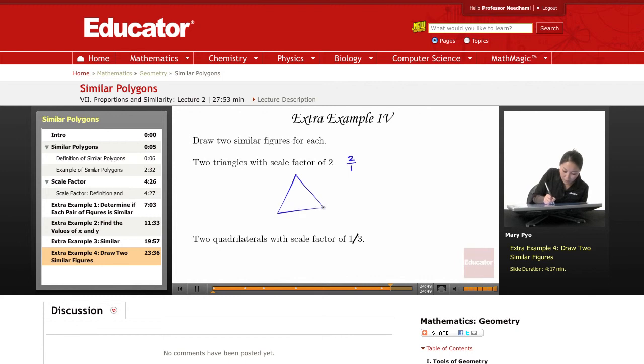So again, for similar polygons, they have the same shape but different size. So then I need to have two triangles that have the same shape. So you can't draw one triangle like this and then another triangle like a right triangle if this is not a right triangle. So make sure they have the same shape.